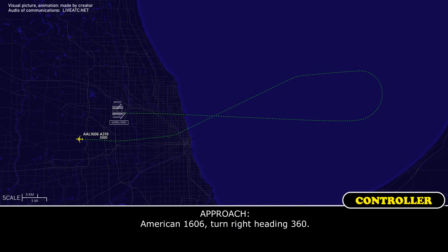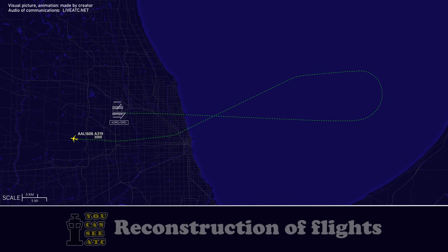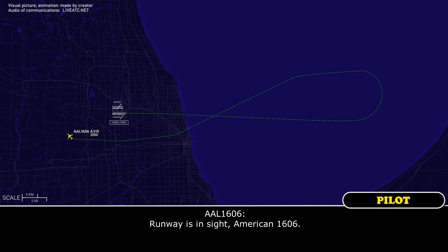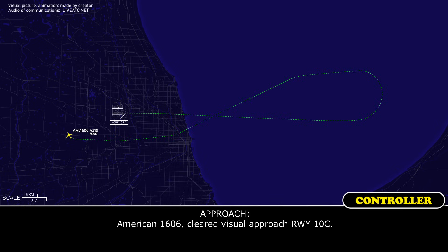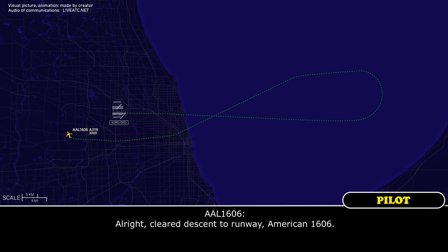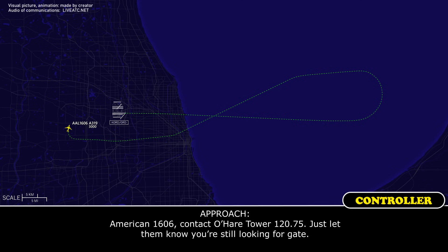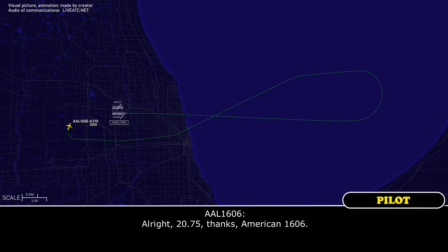American 1606, turn right heading 360. Right turn heading north, American 1606. American 1606, traffic no factor. I think you're VMC there — report O'Hare in sight, runway in sight. American 1606, cleared visual approach runway 10 center. Cleared runway 10 center, American 1606. American 1606, contact O'Hare Tower 120.75, let them know you're still looking for a gate. All right, 120.75, thanks, American 1606.